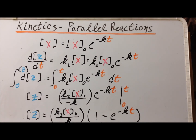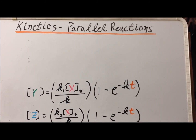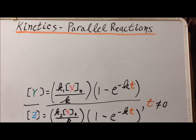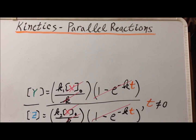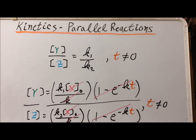Now we have expressions for [Y] and [Z], so let's see how they are related. Listing both expressions side by side, they look very, very similar. We take the ratio [Y]/[Z], valid so long as T ≠ 0 (so the denominator is not zero). Virtually every factor cancels, and we are left with the final result: the ratio of the concentration of Y to Z is simply K1 divided by K2.